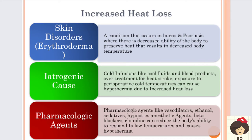Next is increased heat loss. There are conditions where the body heat is not preserved but lost or evaporated outside, causing the body to be unable to maintain temperature and the patient goes for hypothermia. This can be due to skin disorders like erythroderma, which means redness in the skin occurring due to conditions like burns and psoriasis. In burns, the skin - the first line of protection - is lost.